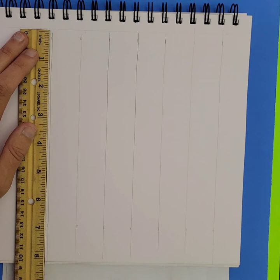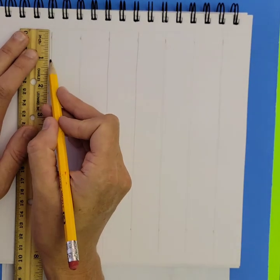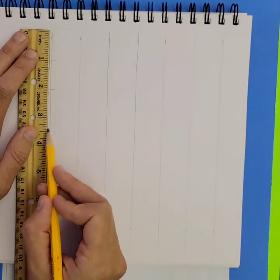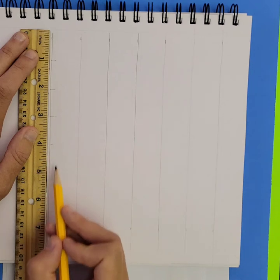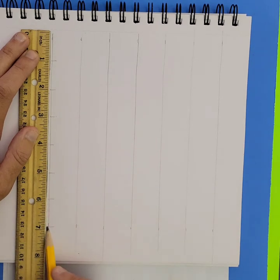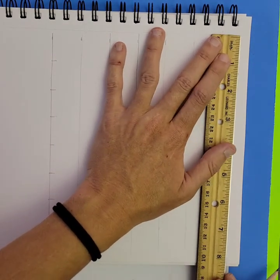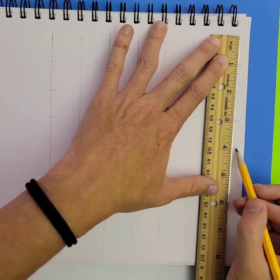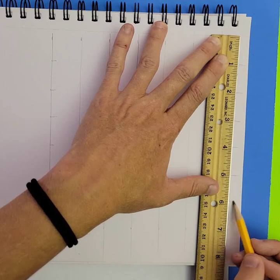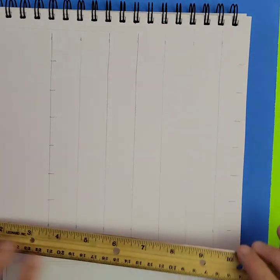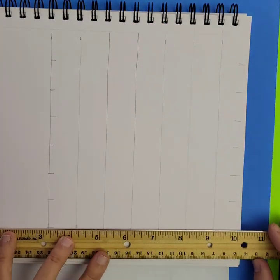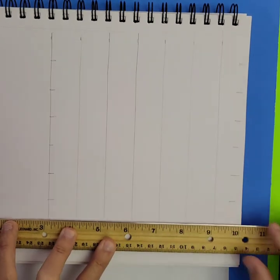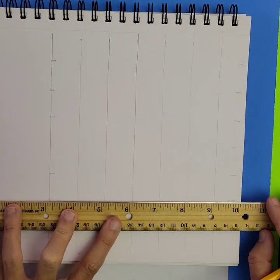And then I'm going to come down the left side and across the right side of my paper. And then I'm going to connect those horizontal lines.